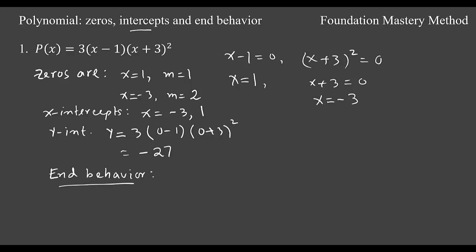For the end behavior, we need to look at the power function. So the power function, let me call y equals 3 times x and then x squared. We just ignore the constants. That will give us the power function. So then this one is 3x to the third order power function.